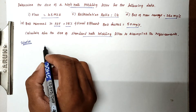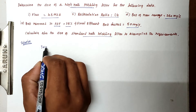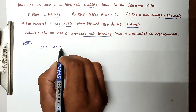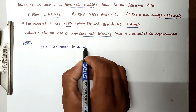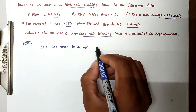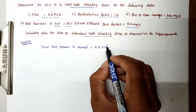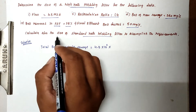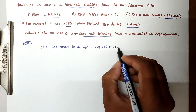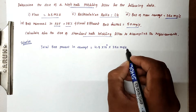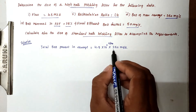For the solution, first we have to find the total BOD present in sewage. The flow is 4.5 million liters per day, and the BOD in raw sewage is 250 milligram per liter. We need to convert these units into kilograms per day.